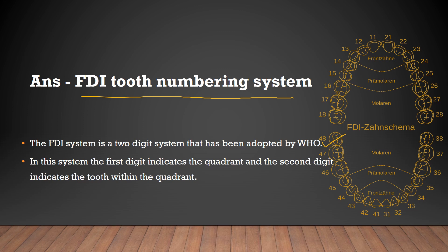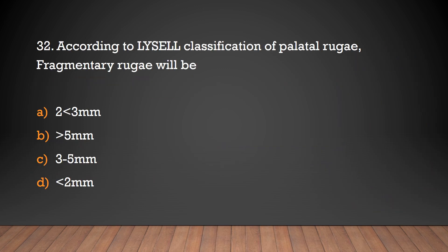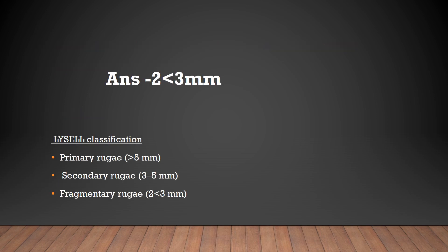According to Lysel's classification of palatal rugae, fragmentary rugae will be less than 3 mm. In Lysel's classification, primary rugae is greater than 5 mm, secondary rugae is 3 to 5 mm, and fragmentary rugae is less than 3 mm.